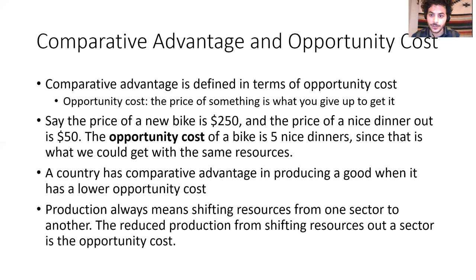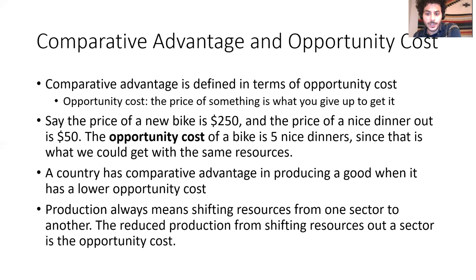We apply this same concept to production and countries. A country has a comparative advantage in producing a good when it has a lower opportunity cost of producing that good. When you produce a good, you have to use productive resources—labor, capital, or land—devoting them to that sector. That means you're not using those resources in another sector, reducing production there. The loss in production from that other sector is the opportunity cost, and that's how we define comparative advantage.